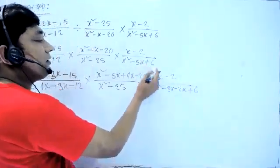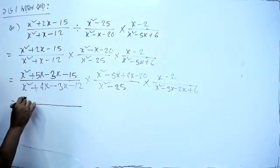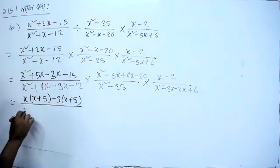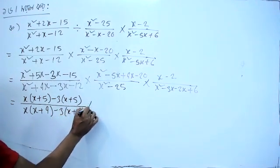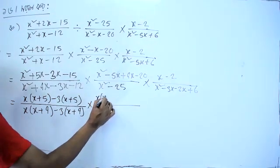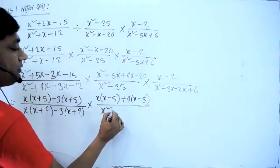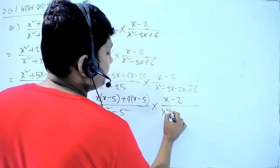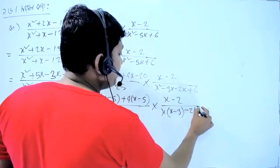x² - 2x + 3x - 3x. Taking common: x + 5 minus 3 common, now x + 5. And x + 4 minus 3 common, now x + 4. x + 4 into x common, now x - 5. Plus 4 common, now x - 5. x² + 5a² - 25y into x - 2. x is x common, now x - 3.